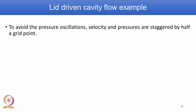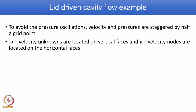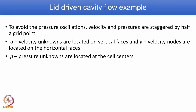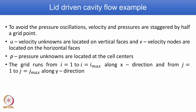We also learned about storage of variables. There are three possibilities: collocated, staggered, and semi-staggered. The collocated method results in what is known as a checkerboard pressure oscillation problem. To avoid that, we use the staggered way of storing variables. In the staggered scheme, u velocity unknowns are located on the vertical faces, v velocity nodes on the horizontal faces, and pressure is stored at the center of the cell.